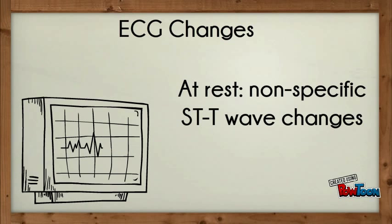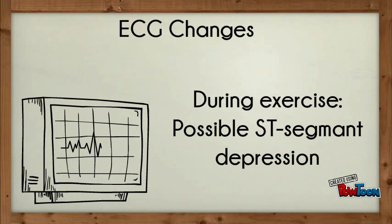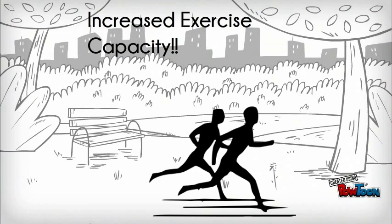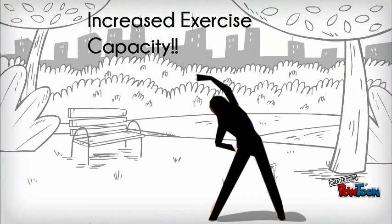Possible ECG changes at rest include nonspecific STT wave changes. During exercise, the ECG may show ST segment depression. Overall, exercise capacity is shown to increase in patients with both atrial fibrillation and congestive heart failure.